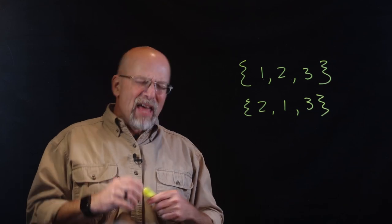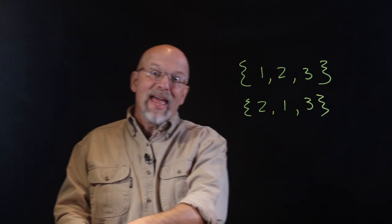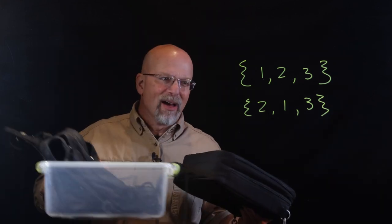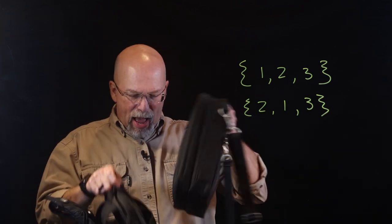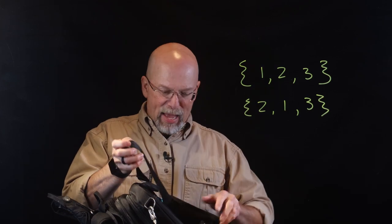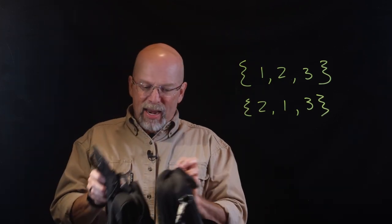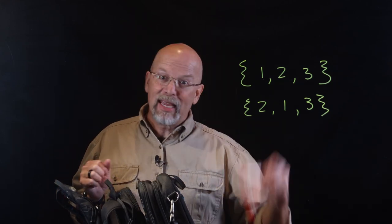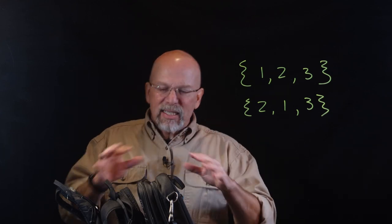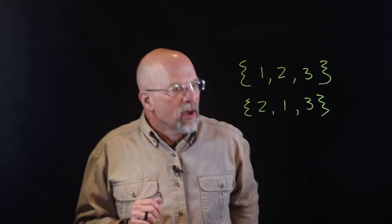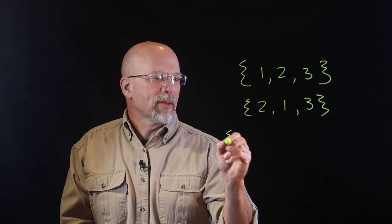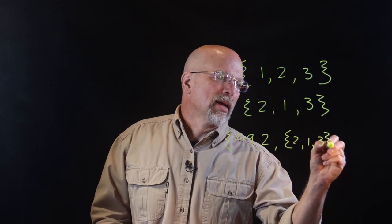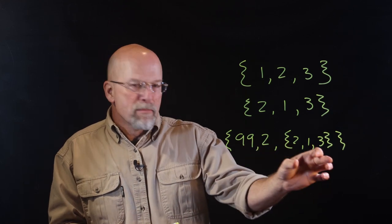A set could actually be a member of a set. I've got this backpack, and I've got a tray of other backpacks. Each of those backpacks contains something else, or maybe is empty. So I've got a set that contains three sets — and it could also contain other items. We can mix things up when creating sets. For example, a set might contain 99, 2, and then inside it, another set {2, 1, 3}.